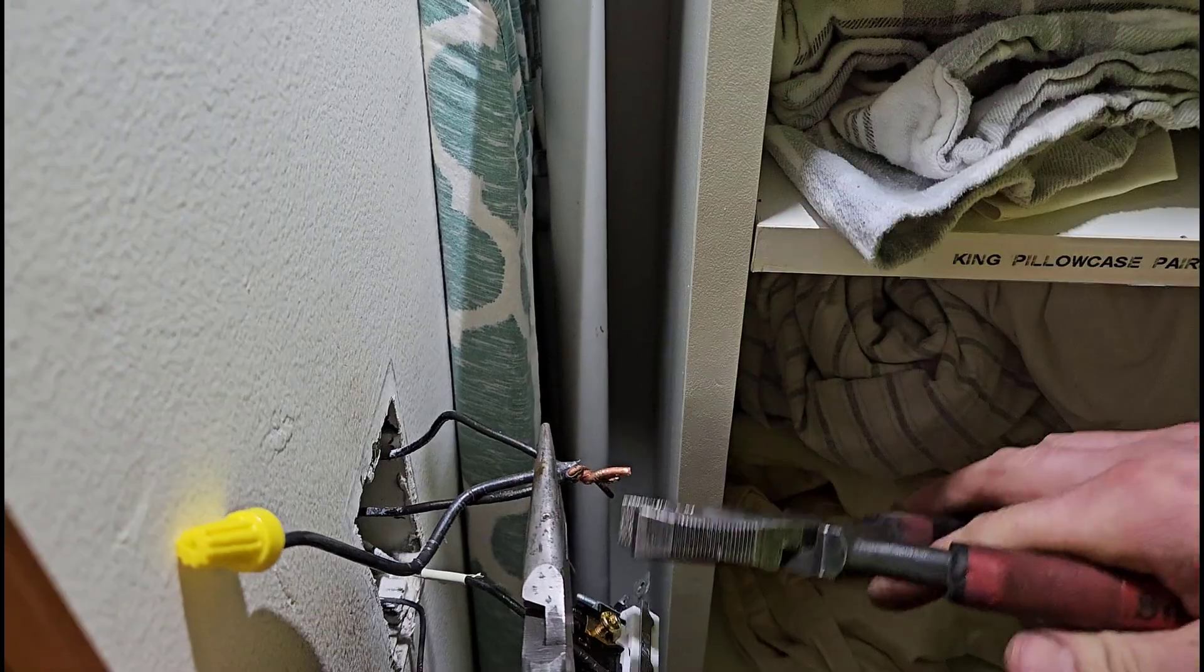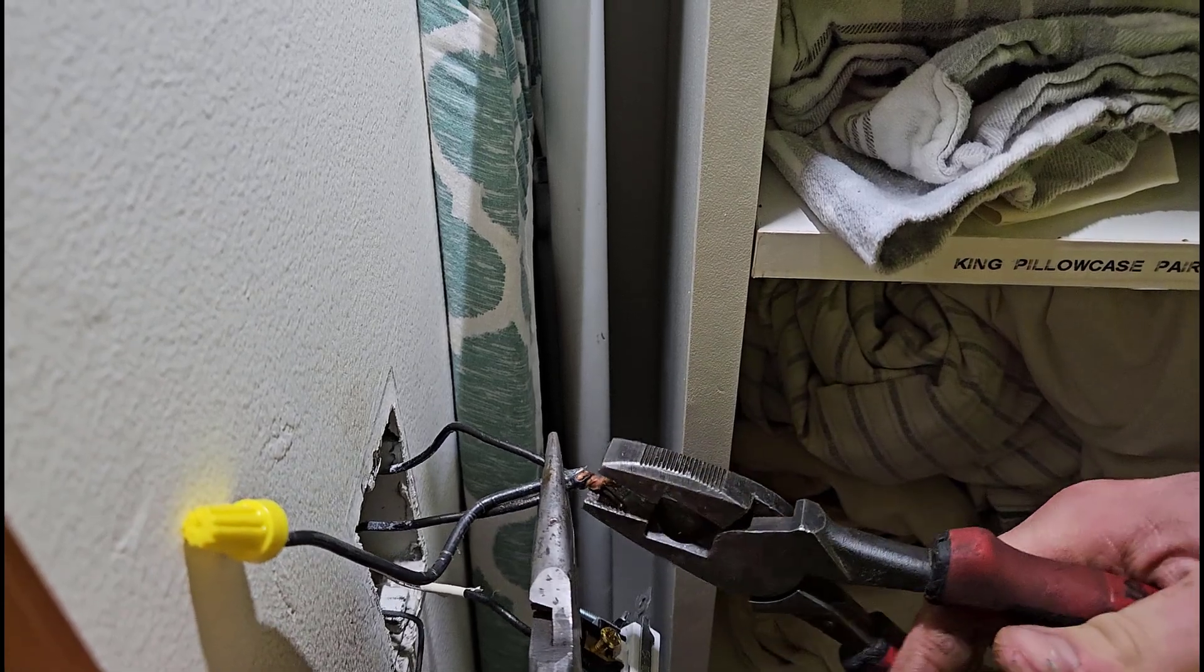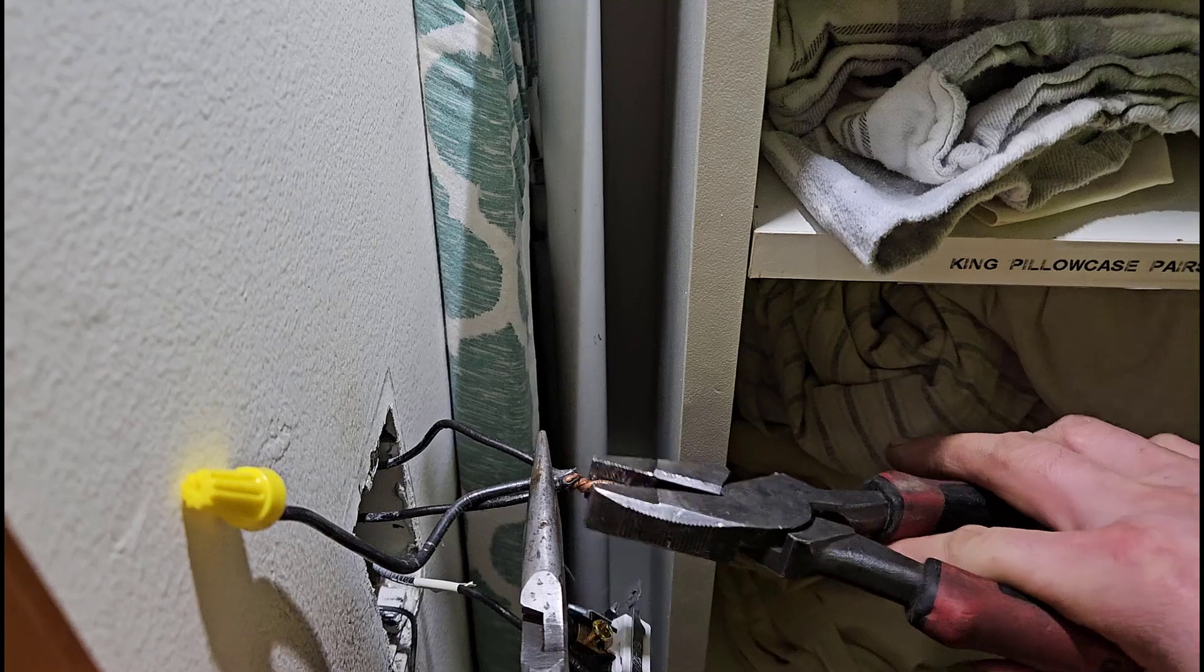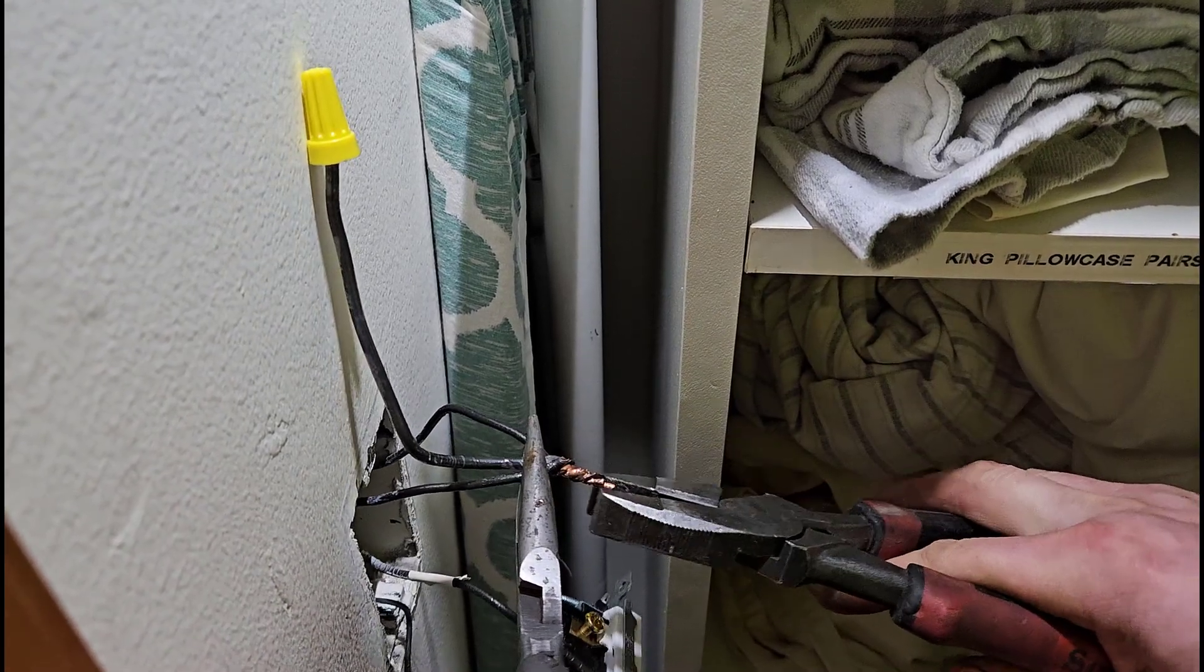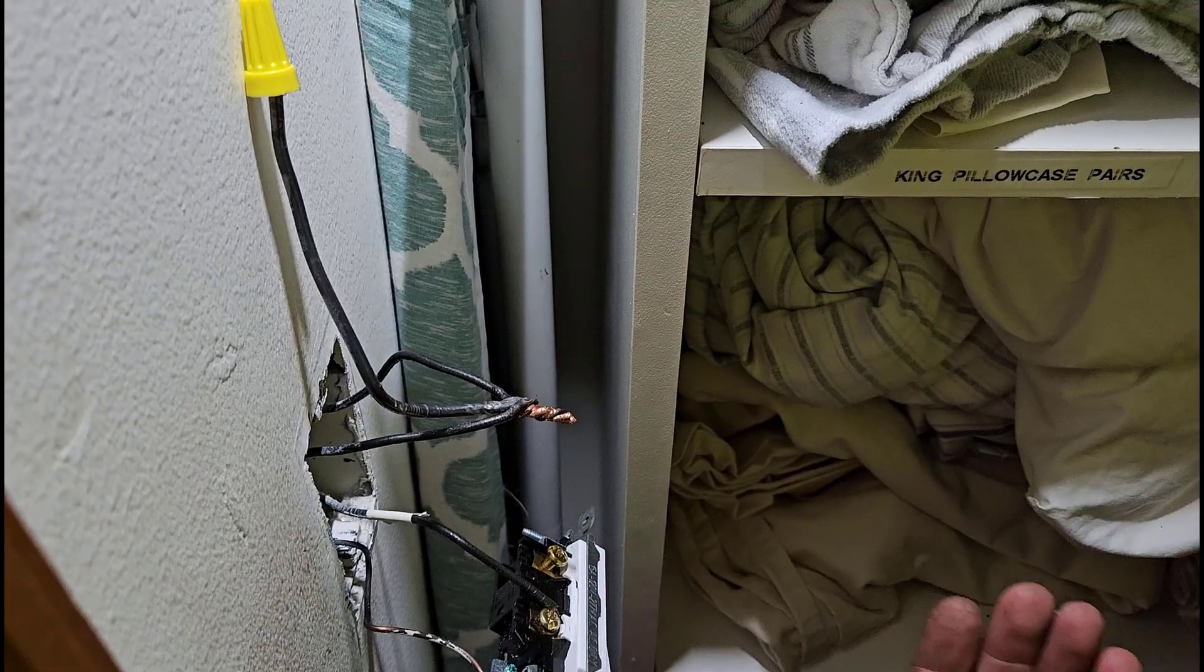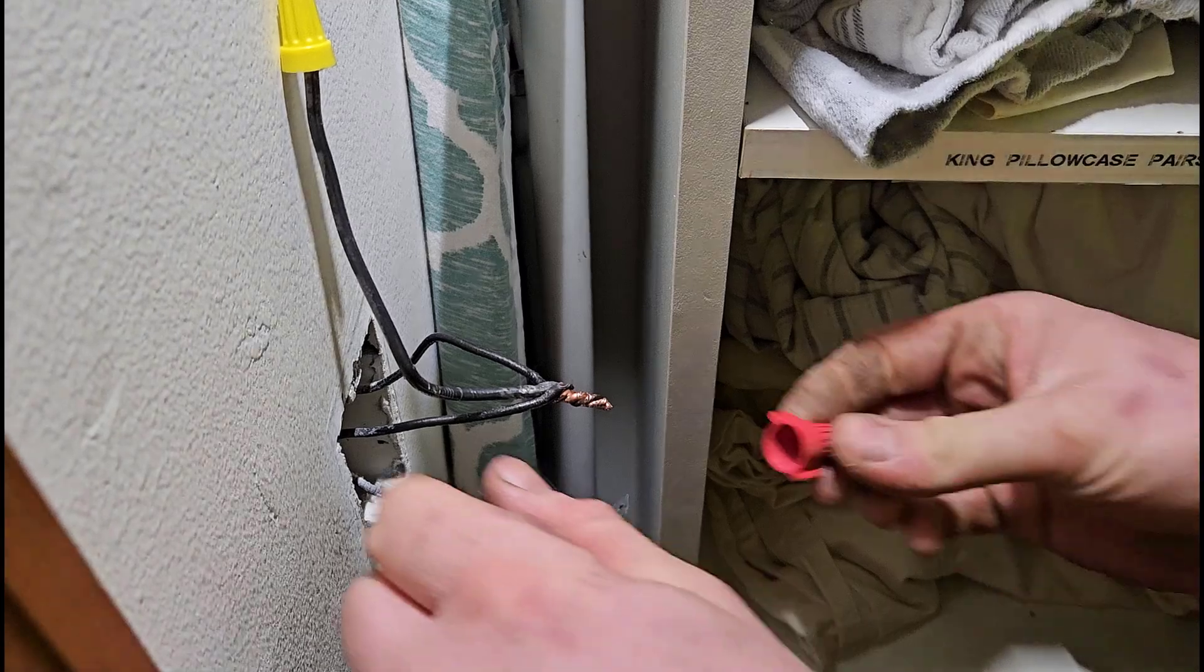And again here we are connecting those two wires that were originally just connected with the light switch itself and a third shorter piece of wire that is going to go to the screw on the light switch. As you can see here you want to make sure the wires are twisted together securely before you put the wire nut on.